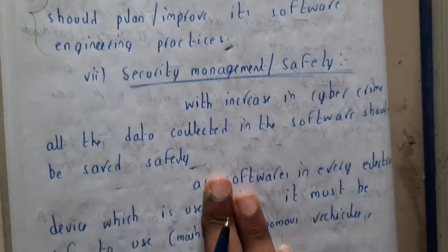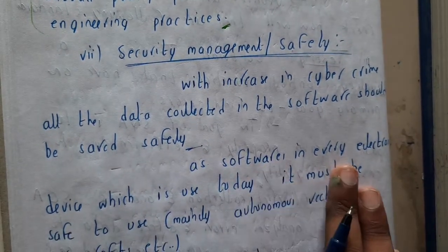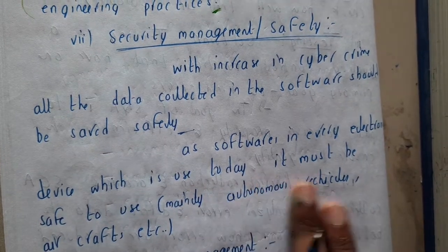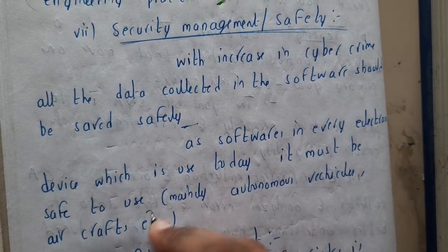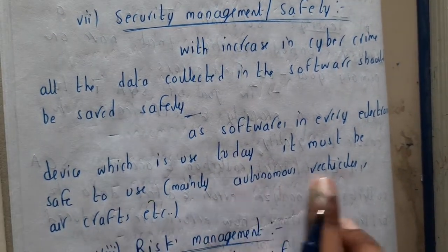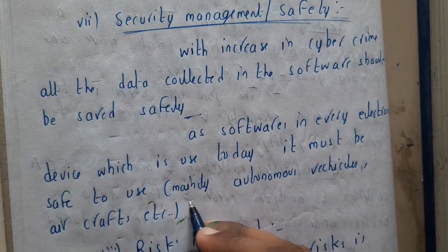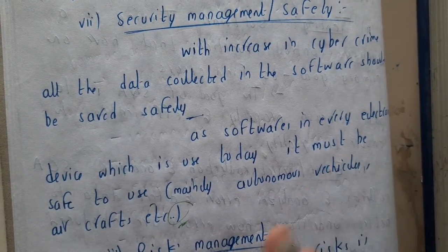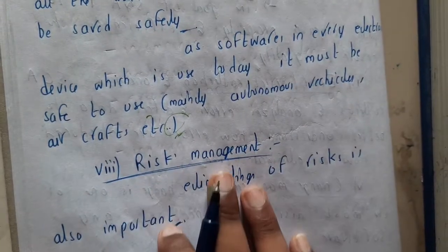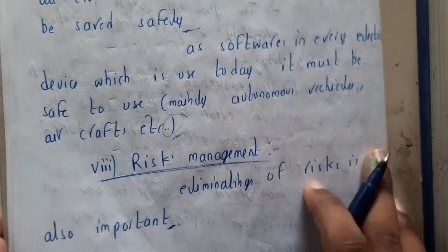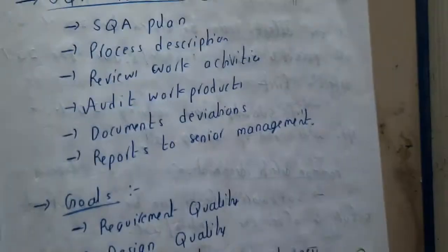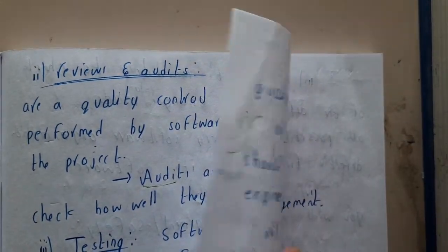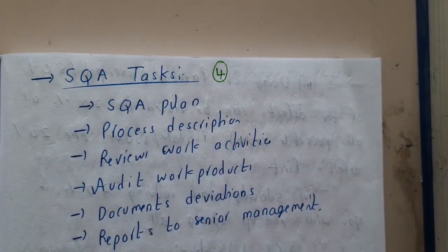Security management and safety: with increasing cybercrime, all data collected in the software should be saved safely. As software is in every electronic device used today, it is essential to store data properly — especially in things like autonomous vehicles and aircraft, where details must be kept highly private. Risk management — eliminating risk — is also an important element of software quality assurance.